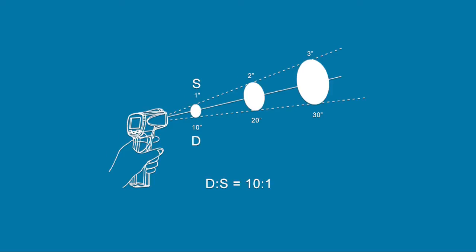For every 10 inches, the spot being measured increases as well. So at 30 inches away, the spot size is 3 inches.